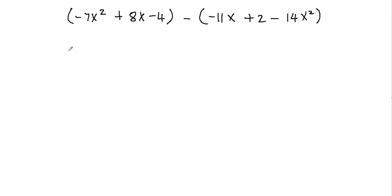So I have a negative 7x squared. Now I'll write my first polynomial without the parentheses, plus 8x minus 4.